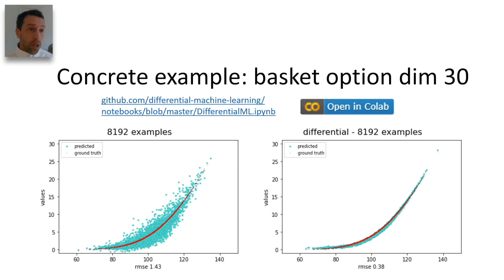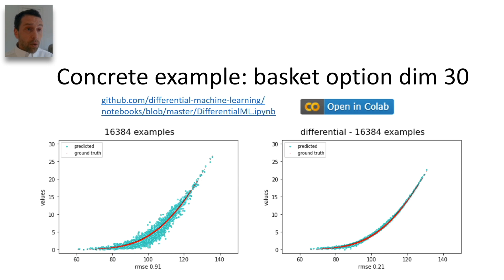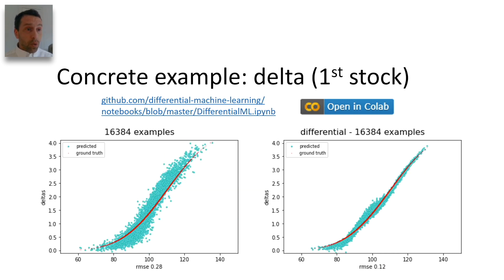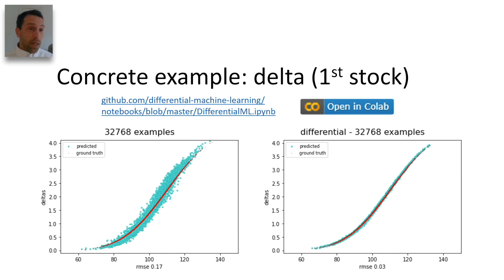Reverting to the basket option from the TensorFlow notebook on GitHub, we see a stellar improvement, both for price and delta approximations, so we can train accurate approximations on small datasets, simulated in realistic time.